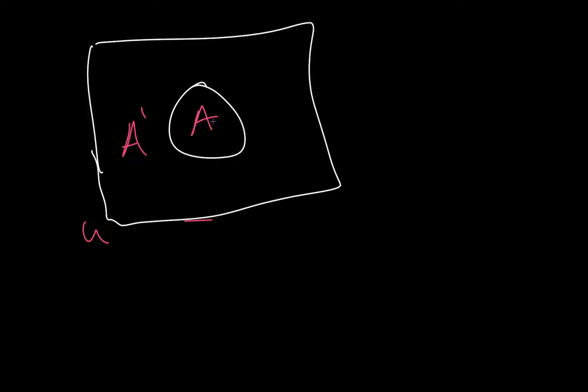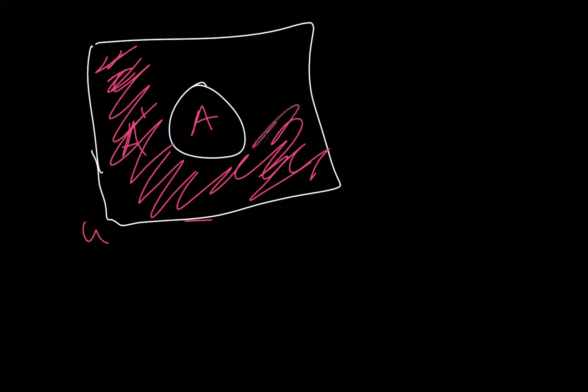So, the first thing I want to show you is just a basic Venn diagram. We have our universal set, which is the outside, and then we have our set, which is A, and then we have anything that doesn't fall into A, which we call the complement. So, this is just a basic idea of a Venn diagram. Everything out here that's not inside of the circle that we call A is the complement of A.